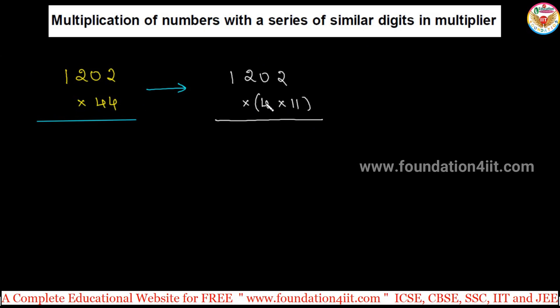Calculate in mind just with 4. By observing, 44 is nothing but 4 into 11. I'm writing each step to understand. Take this 4 and multiply: 4 times 2 is 8, 0 times 4 is 0 to 8, 4 times 1 is 4. Now this number should be multiplied with 11 in mind.